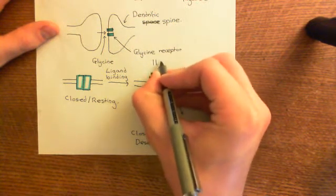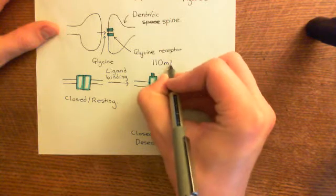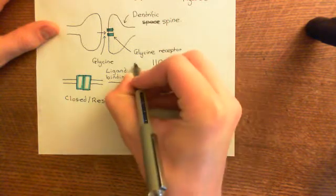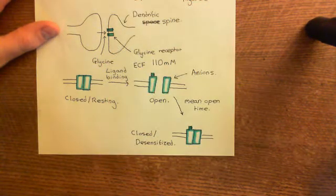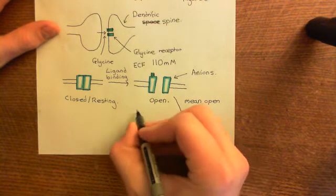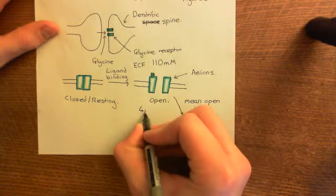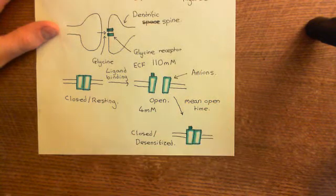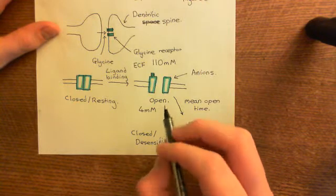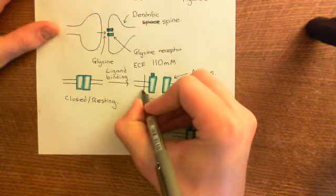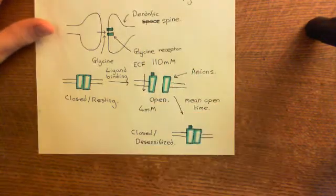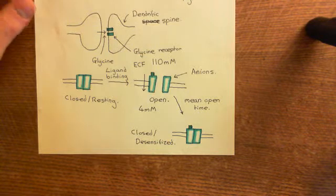Starting with the concentration gradient: roughly, the concentration of chloride anions extracellularly is 110 millimolar, whereas the concentration intracellularly is around 4 millimolar. So you have a nearly 30-fold concentration gradient favouring the movement of chloride anions in. The concentration gradient is favouring chloride to move in. However, we now need to consider the electrical potential difference across the membrane.